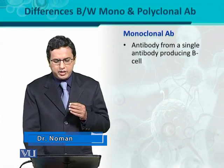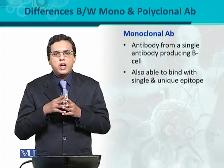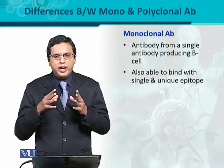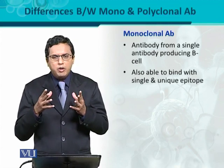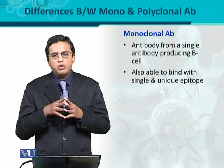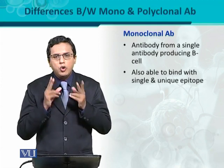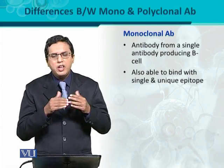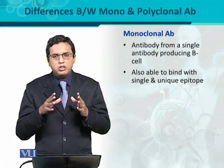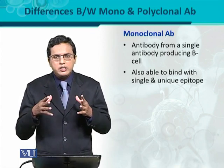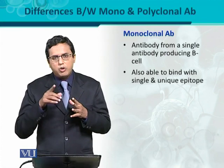Another important aspect regarding monoclonal antibodies is based on their binding ability or affinity — they bind with a single and unique epitope. If on one antigen there are many epitopes, epitope 1, 2, or 3, a monoclonal antibody specific for epitope 1 would only bind with epitope 1 and not with epitope 2 or epitope 3. This determines the specificity of the monoclonal antibody — it is very specific to its corresponding epitope.